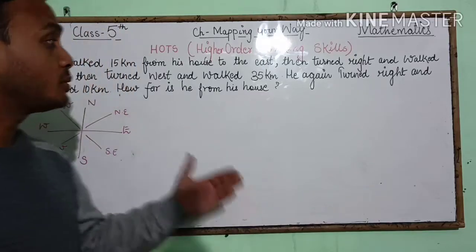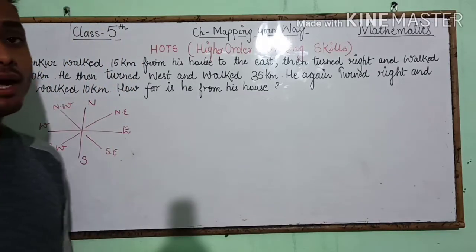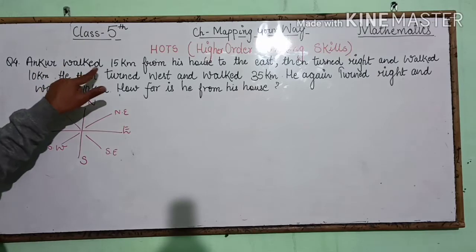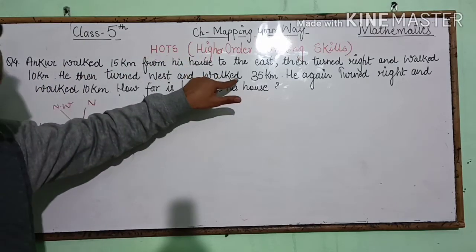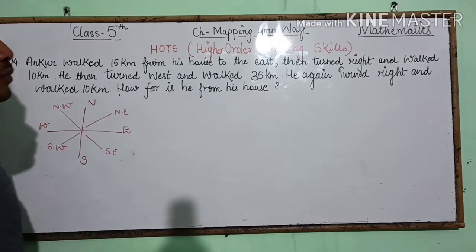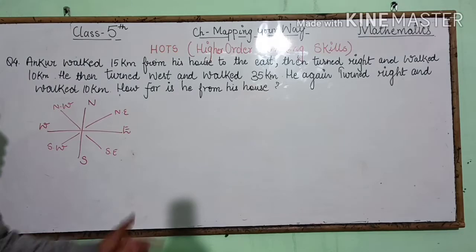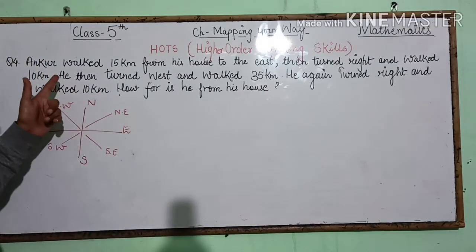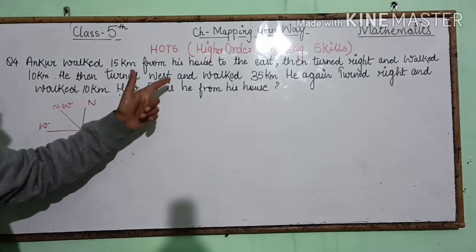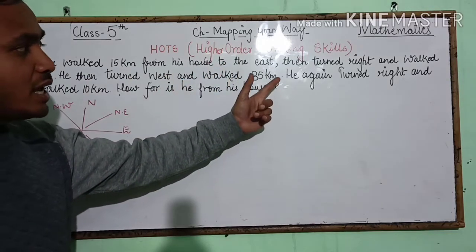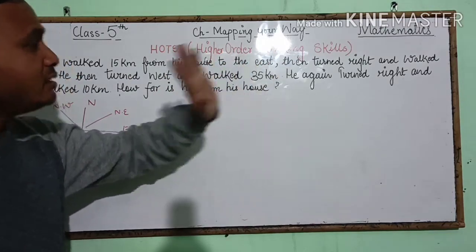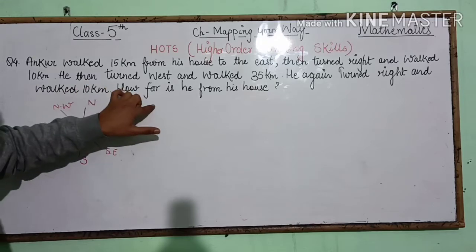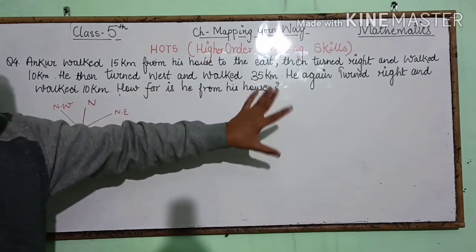Question number four: Ankur walked 15 kilometers from his house to the east, then turned right and walked 10 kilometers. He then turned west and walked 35 kilometers. He again turned right and walked 10 kilometers. How far is he from his house?